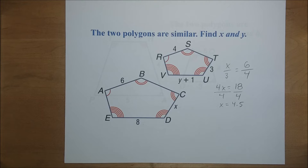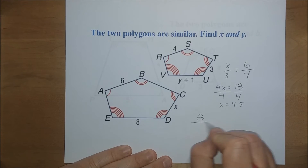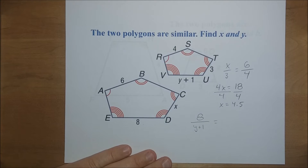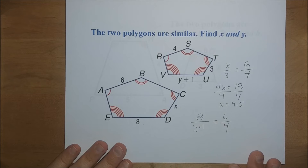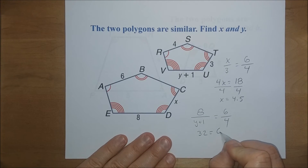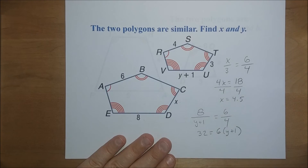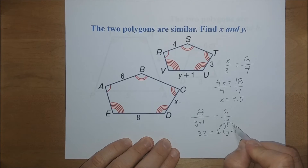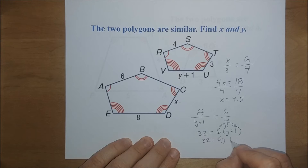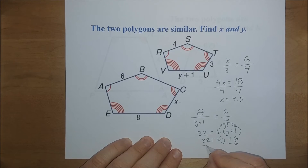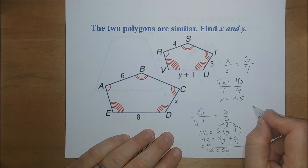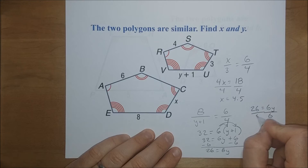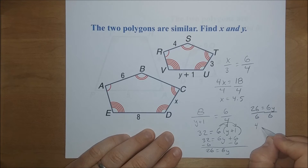For y, we use the same scale factor: 8 over (y + 1) equals 6 over 4. Cross multiplying: 8 times 4 is 32, equals 6 times (y + 1). Distributing: 32 equals 6y + 6. Subtracting 6 from both sides: 26 equals 6y. Dividing both sides by 6, y equals 4 and one-third, or equivalently 26 divided by 6.